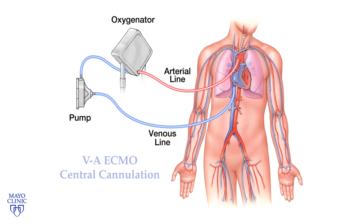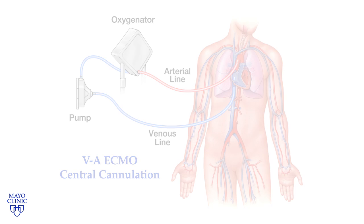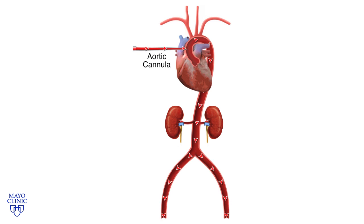VA ECMO is often performed using centrally placed cannulas, meaning that the cannulas are placed in the great vessels in close proximity to the heart. This animation shows highly oxygenated blood from the ECMO circuit being returned to the patient through an arterial cannula placed in the patient's ascending aorta.